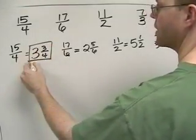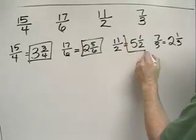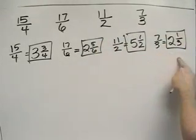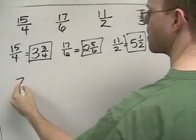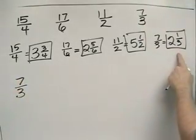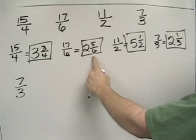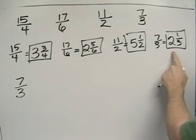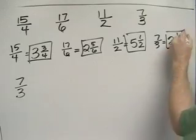And now we can look at these mixed numbers, and it's really easy to see that 7 thirds is the least, because 2 and 1 third is less than 2 and 5 sixths. This is almost 3, and this is just barely over 2. So that's the least.